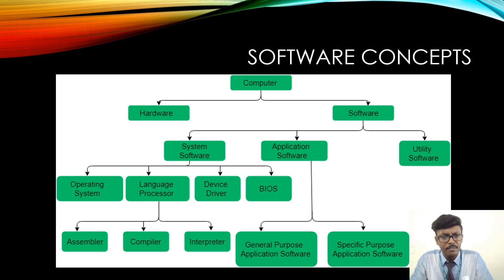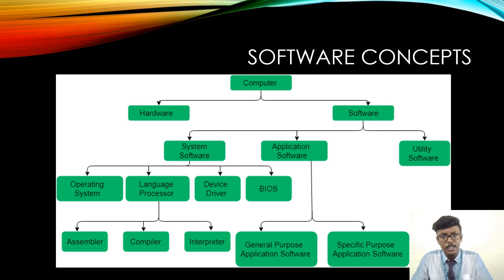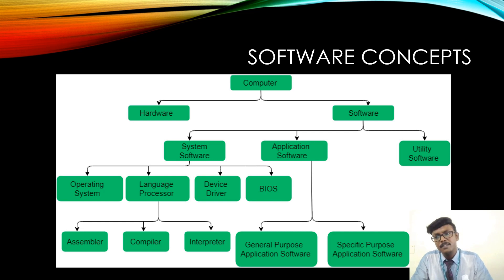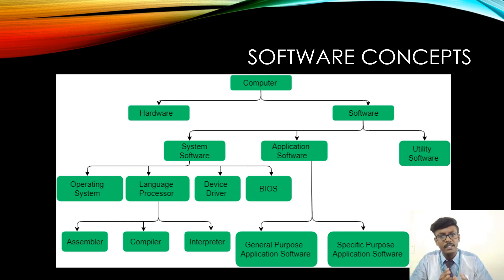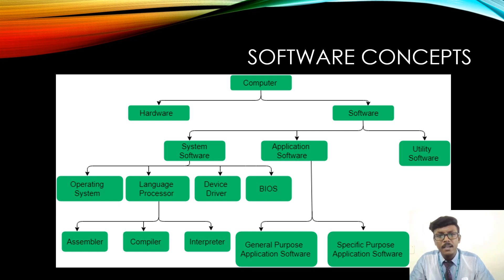For example, an antivirus installed on a computer or mobile device is software. A Microsoft Word document used for editing or creating documents is also software. Similarly, a media player used to play multimedia files is also called software. Depending on the area of implementation, we can divide software into three major categories: system software, application software, and utility software.